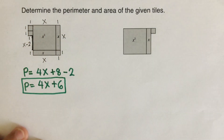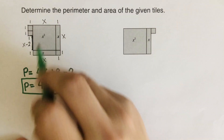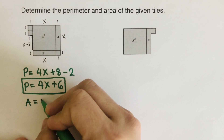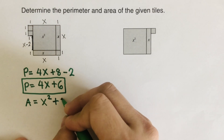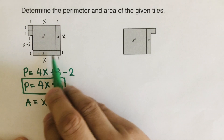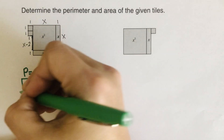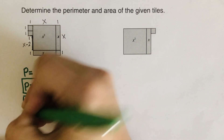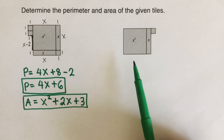Now let's find the area. We add all the tiles inside. There's one x² tile, so write x². There are two x tiles, so plus 2x. Count the ones: one, two, three — that's plus 3. So the area expression is x² + 2x + 3. Pause the video and try the next problem on your own.